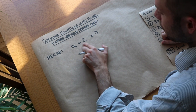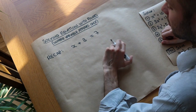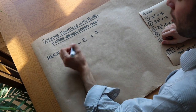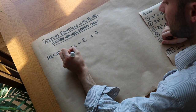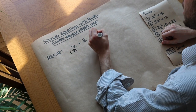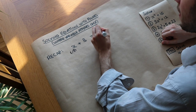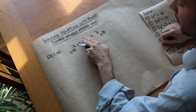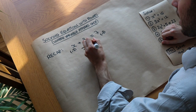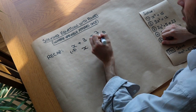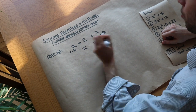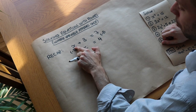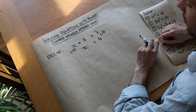To get x on its own, we want to get rid of that plus 3. So to get rid of plus 3, we do the opposite — we subtract 3 from both sides. On the left-hand side, the minus 3 gets rid of the plus 3, leaving just x. Subtracting 3 from 7 gives us 4, so x equals 4, and that works because 4 plus 3 is indeed 7.